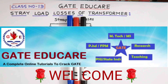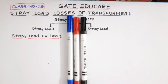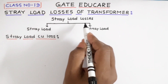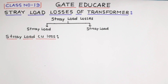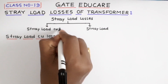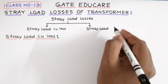Welcome to Get It Trigger. In this video, the stray load losses of a transformer will be explained. Types of stray load losses will be discussed and how the stray load loss can be reduced will also be explained. Stray load loss of a transformer can be classified into two categories: one is stray load copper loss and another is the stray load iron loss.